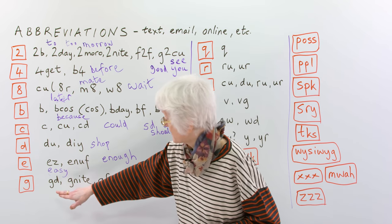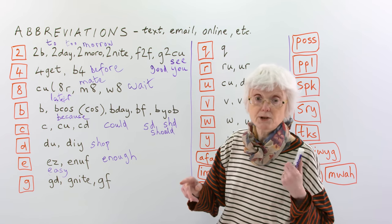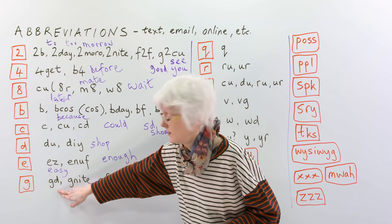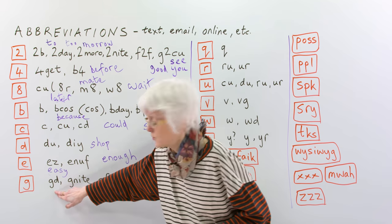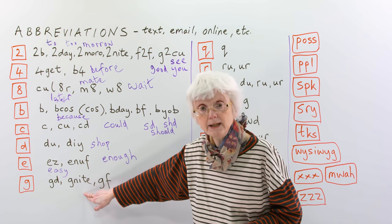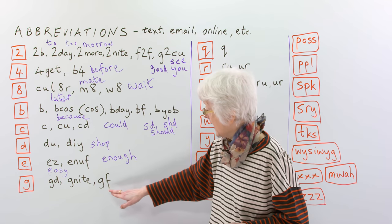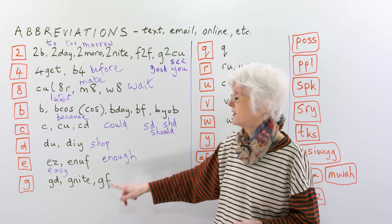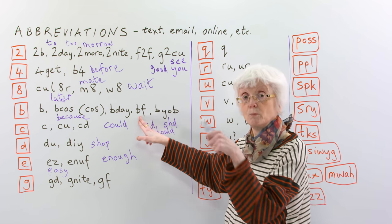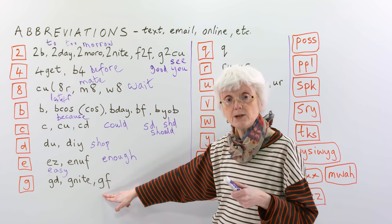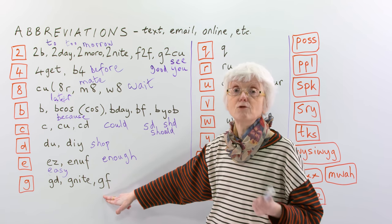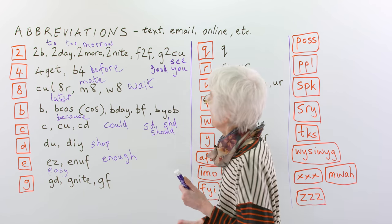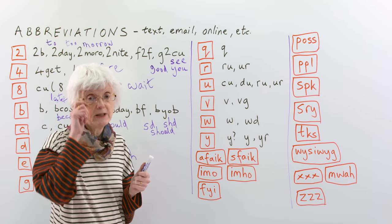And then finally for this column, G often means good, as we had here, good to see you. So, good could be just G on its own or GD. And G night, good night. And then this one, we had BF and now we've got GF. So, BF was best friend or boyfriend. This one is girlfriend, just girlfriend. Okay, so let's move on to the next column.